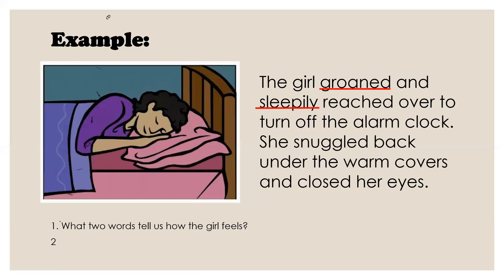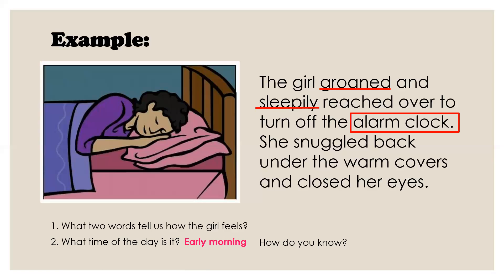Here's the next question: what time of the day is it? Maybe it's early in the morning — but how do you know? Because there was something she did before she got back under the warm covers and closed her eyes. She reached over to turn off the alarm clock. So the alarm clock tells us she doesn't want to get out of bed early in the morning when it went off.